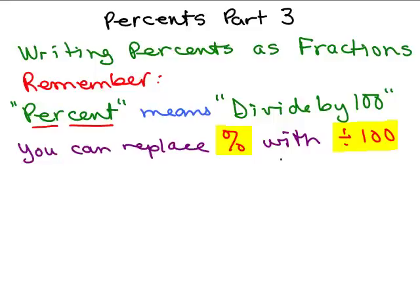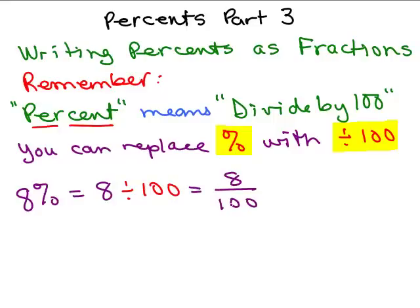Let's try a problem. Let's say we've got 8% and we want to write it as a fraction. If we use this idea that percent can be replaced with divide by 100, then this will be the same thing as 8 divided by 100, which we could write as a fraction 8 over 100. Now all we need to do is reduce the fraction, so you could divide the top and bottom by 4, the numerator and denominator by 4, and that gives you 2 25ths.